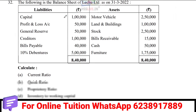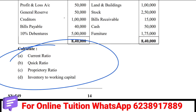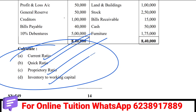Then you will check these important ratios: Current Ratio, Quick Ratio, Proprietary Ratio, Debt-to-Equity Ratio, Inventory Ratio, and Working Capital Ratio. Those are the important ratios.